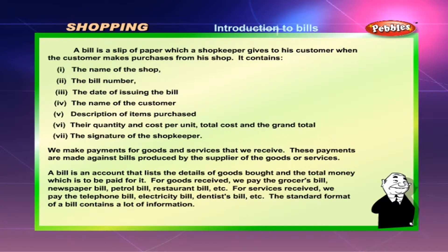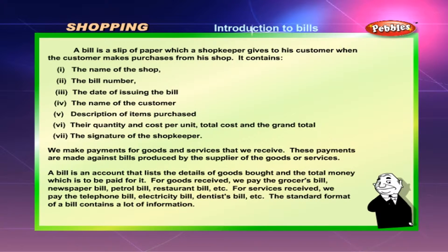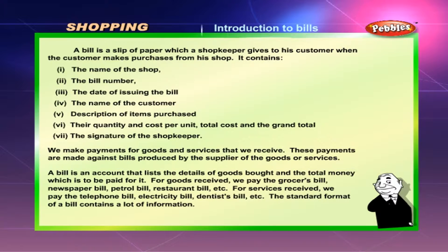A bill contains the name of the shop, the bill number, the date of issuing the bill, the name of the customer, description of items purchased, their quantity and cost per unit, total cost and the grand total, and the signature of the shopkeeper.